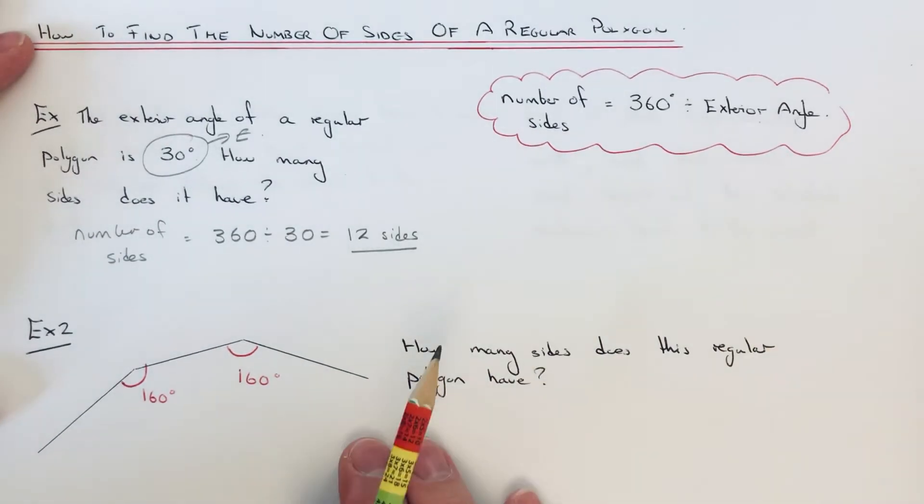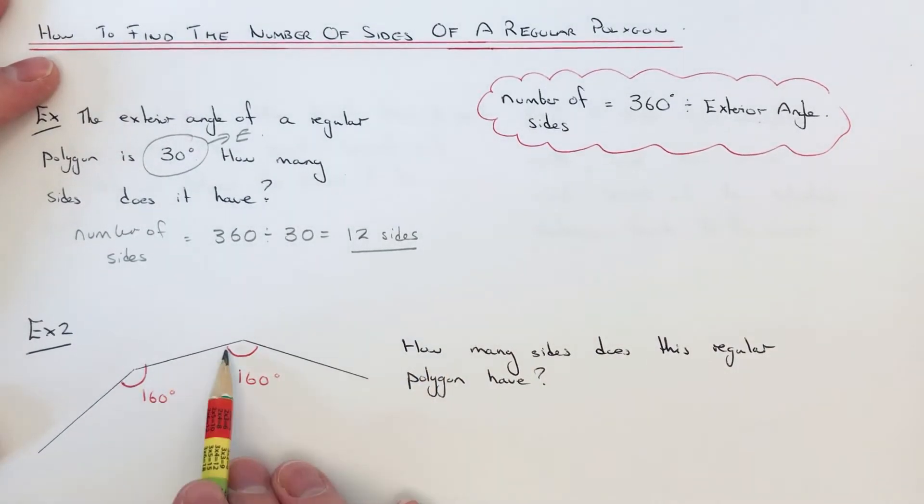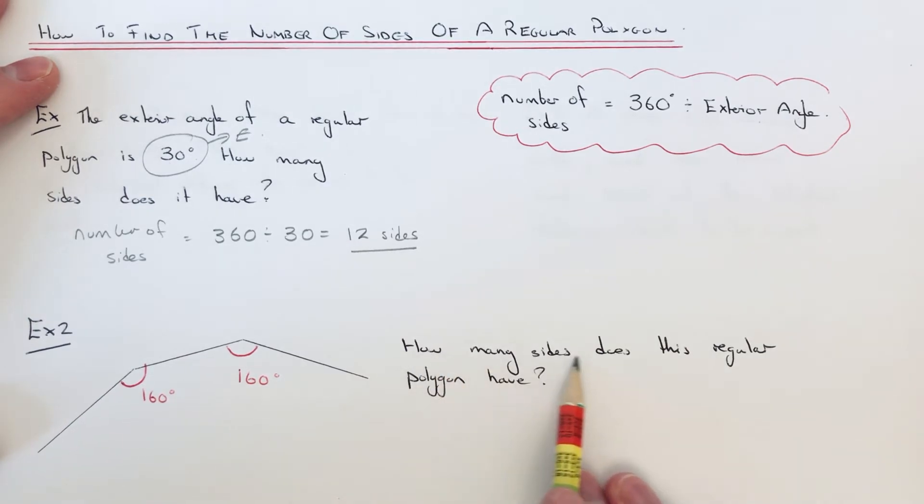Let's move on to the second example then. We've got a partly drawn regular polygon and we've got to work out how many sides this regular polygon has. This time we're given the interior angle, so we need to find the exterior angle.